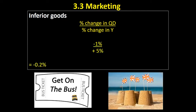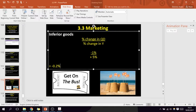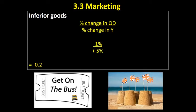Let's have a look at an example of inferior goods. Incomes have gone up by 5% — that's the percentage change in Y. There's been a minus 1% change in the quantity demanded for the product. This leads to a coefficient of income elasticity of demand of minus 0.2. What sort of products might be categorised as inferior goods? Well, bus tickets are often inferior goods — as people increase their income, they prefer to take taxis or learn to drive, and switch from getting the bus to another form of transport.